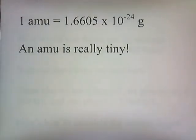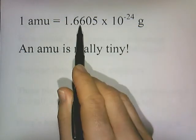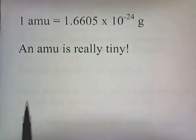One atomic mass unit is 1.6605 times 10 to the negative 24 grams. So that's this number with 24 zeros in front of it, which is a really tiny number. The only point of showing this fact is to show that an atomic mass unit is really tiny.